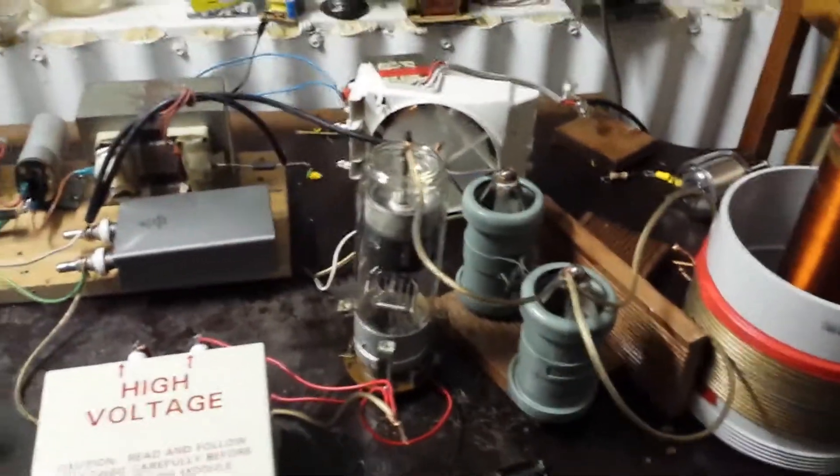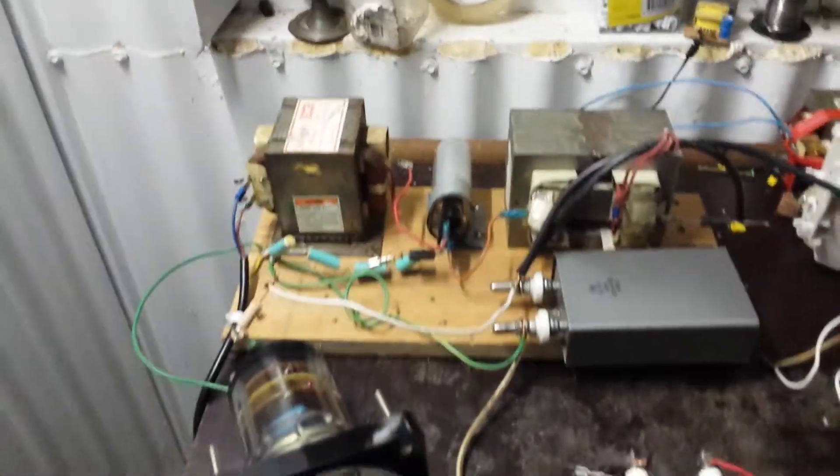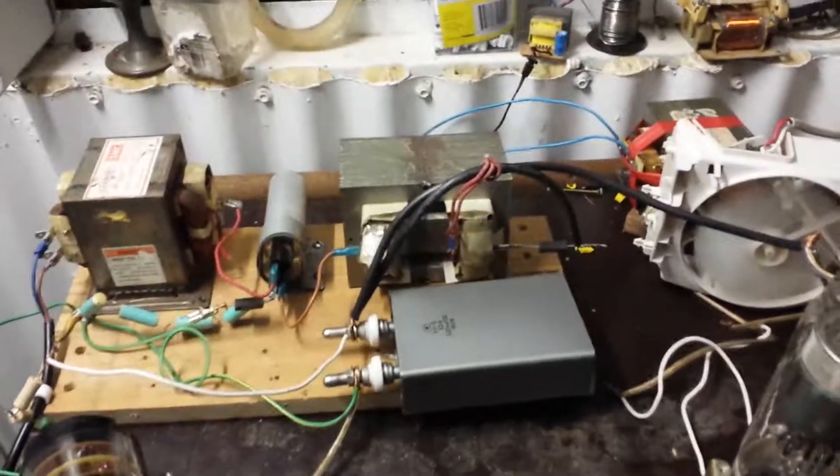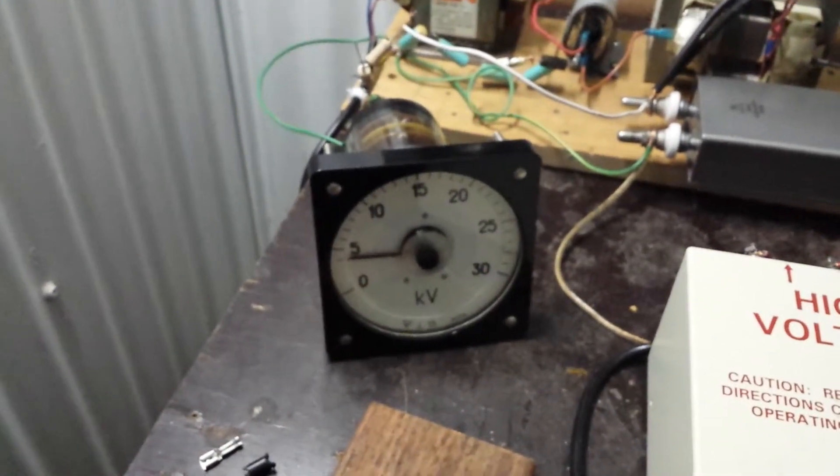I've got a Thyratron Tesla Coil that I'm trying to get working here. I've got a half-wave voltage multiplier there with a DC Resonant Charger hooked up to an incorrect kilovolt meter.